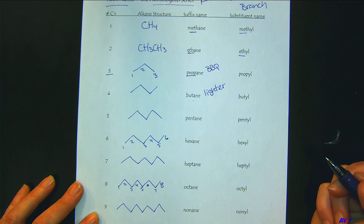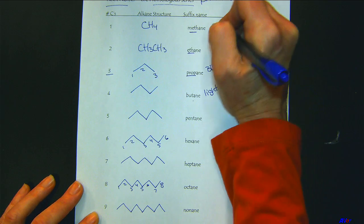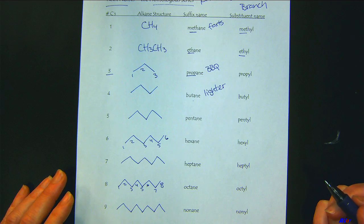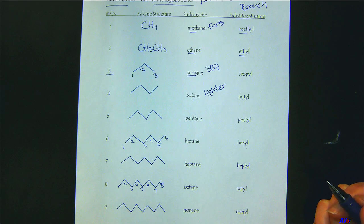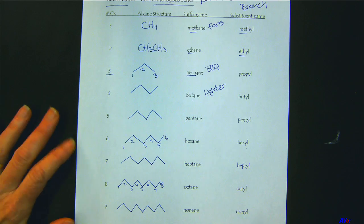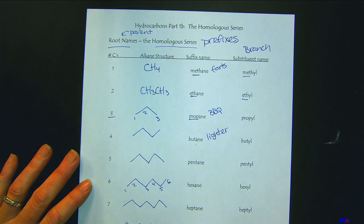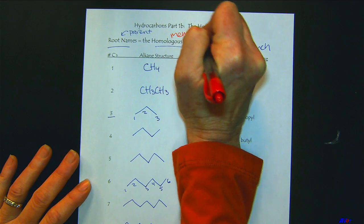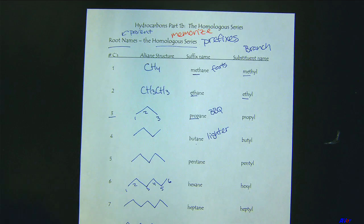Methane is mostly found in farts — in cow farts. Put a little personality on those so they have a little more meaning. Make sure to memorize the homologous series — the sooner the better.